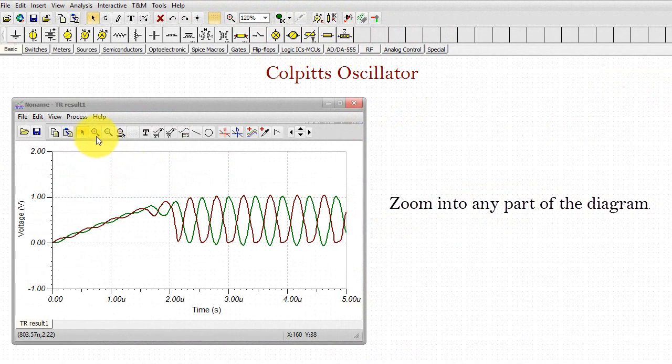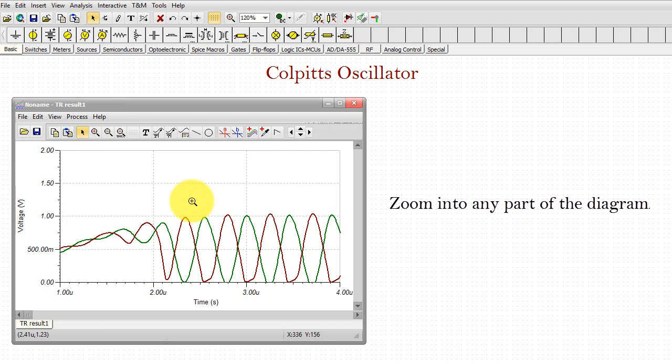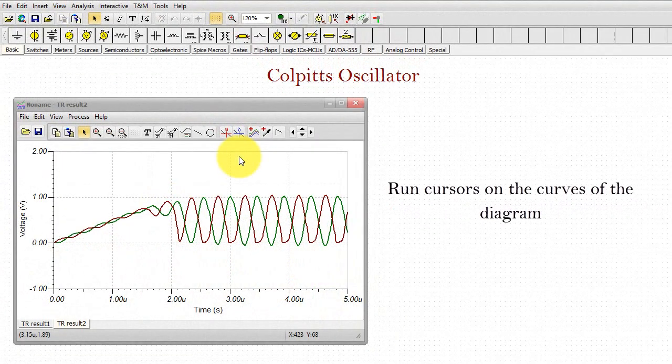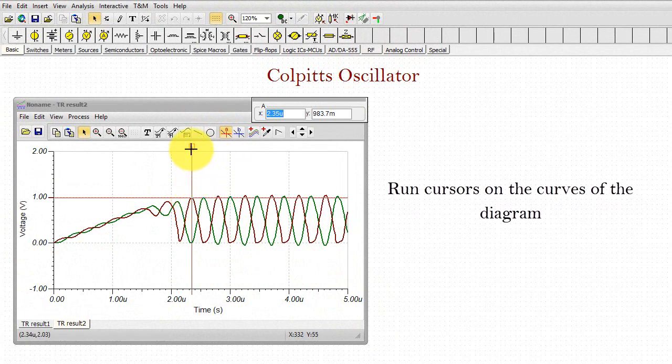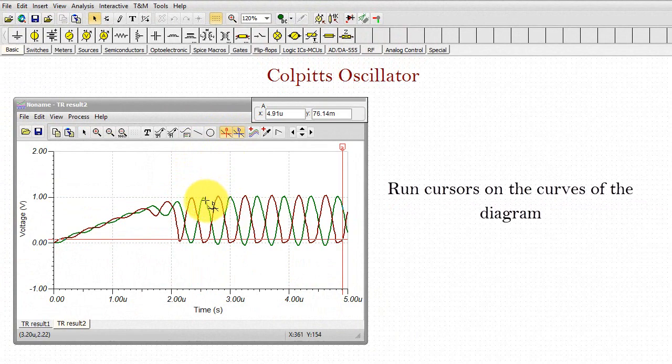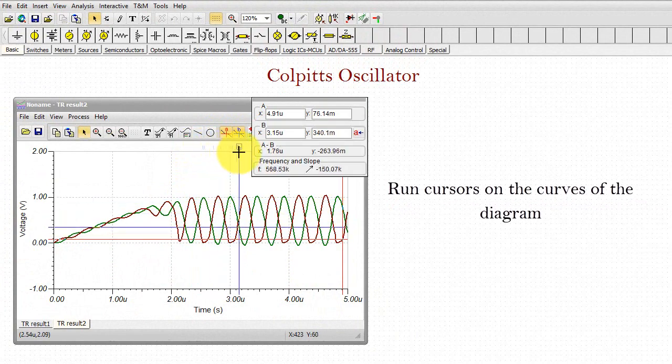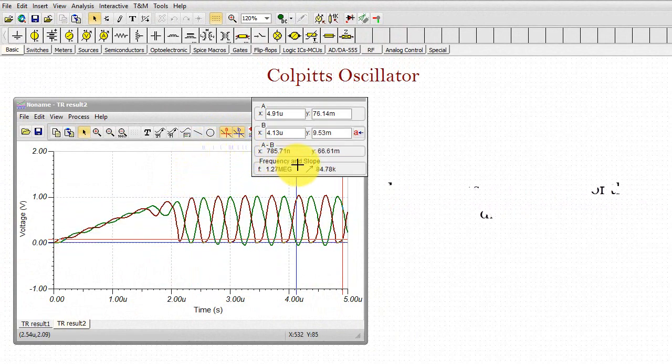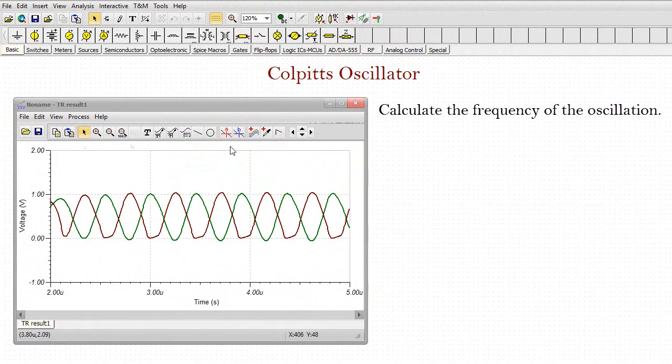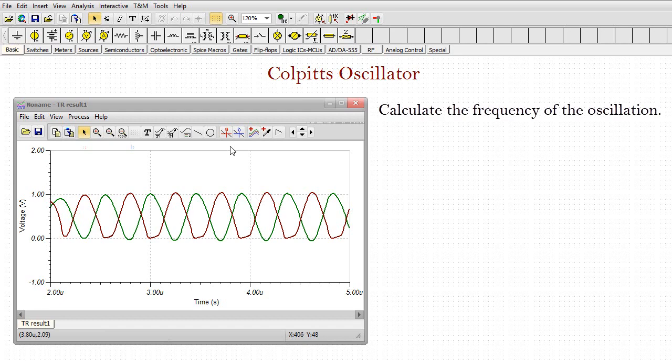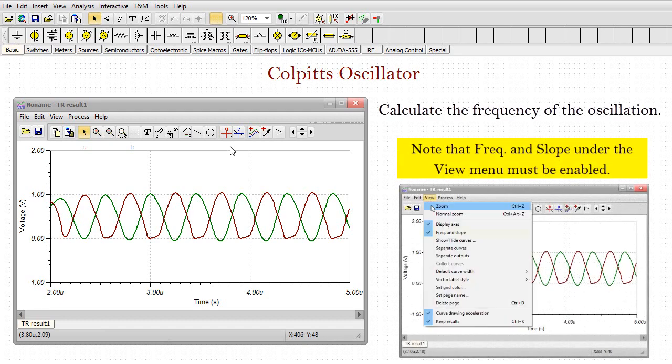Zoom into any part of the diagram. Run cursors on the curves of the diagram. Calculate the frequency of the oscillation. Note that frequency and slope under the view menu must be enabled.